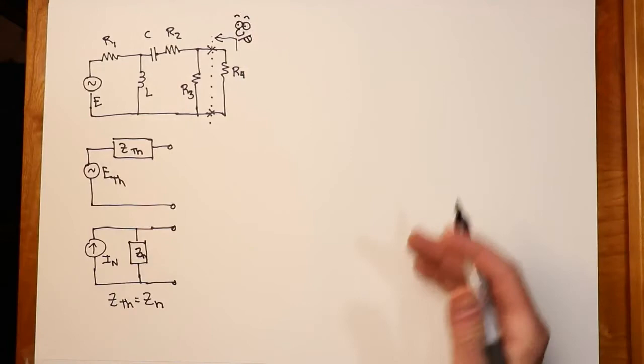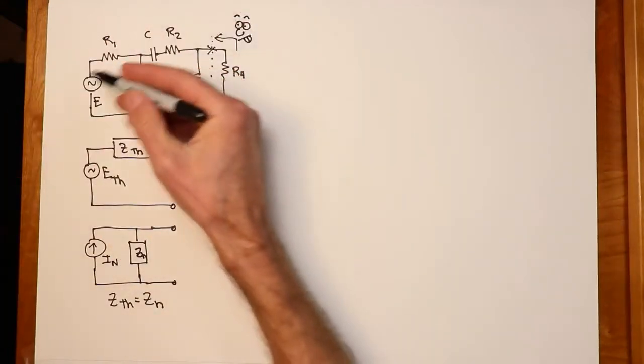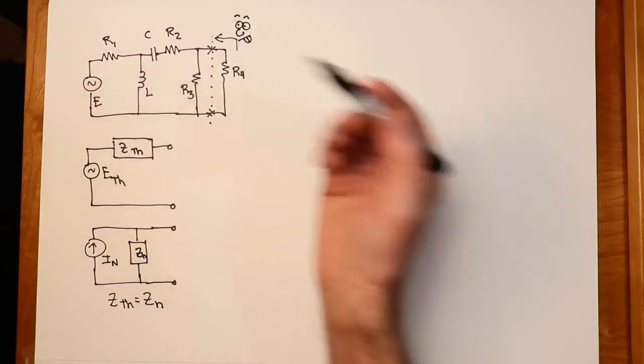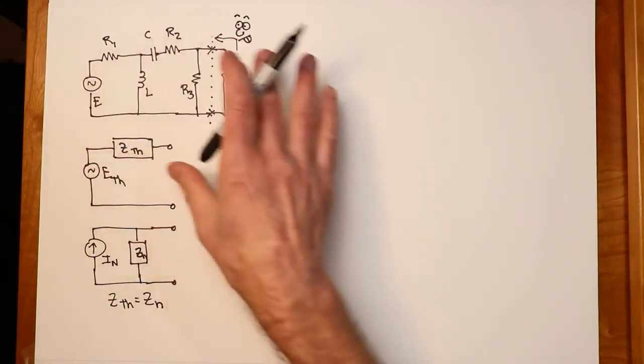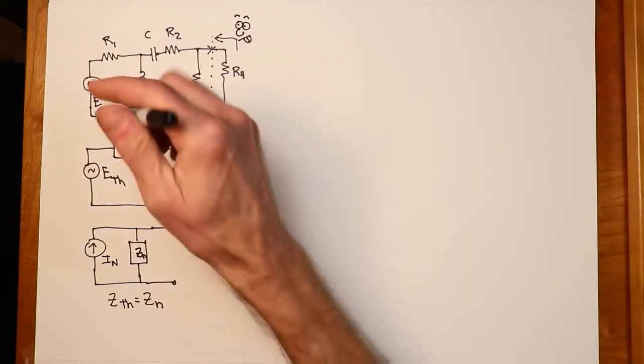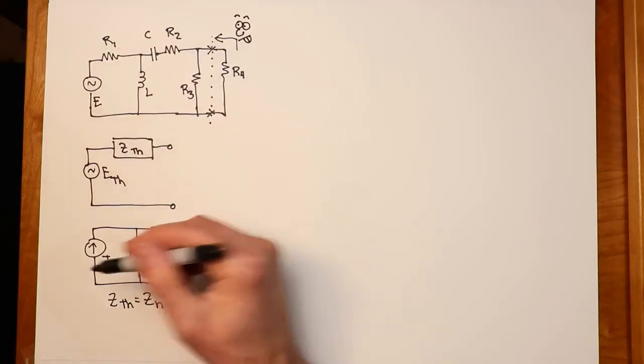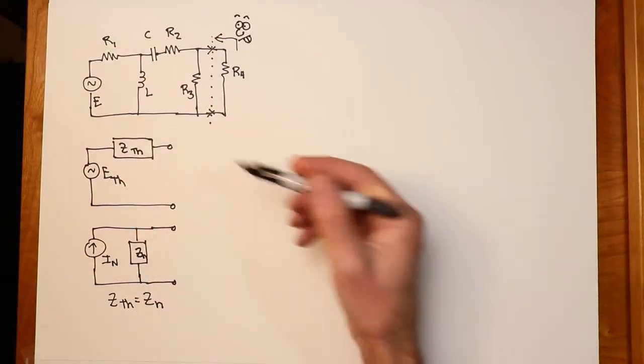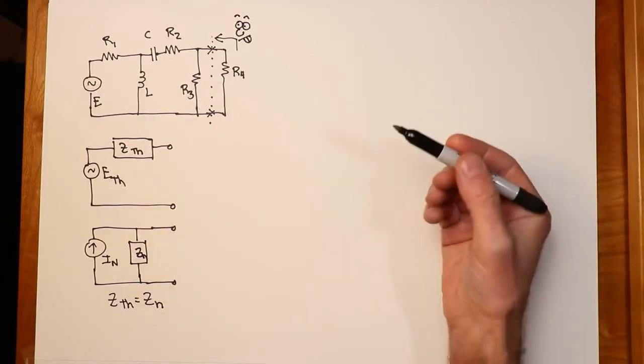By R4, what do we see? So how do we simplify this? Well, whatever sources we have, in this case we just have one, but we could have multiple sources, we replace those sources with their ideal internal impedance. For an ideal voltage source, that's going to be 0. For an ideal current source, that's going to be infinity. So we basically short the voltage sources, we open up the current sources, we see what we get.